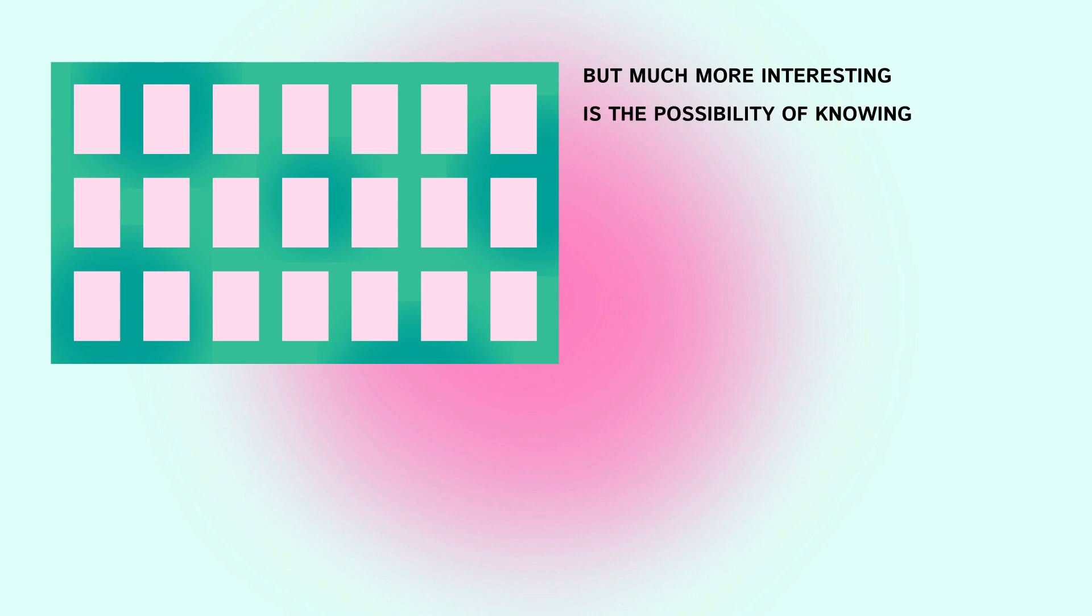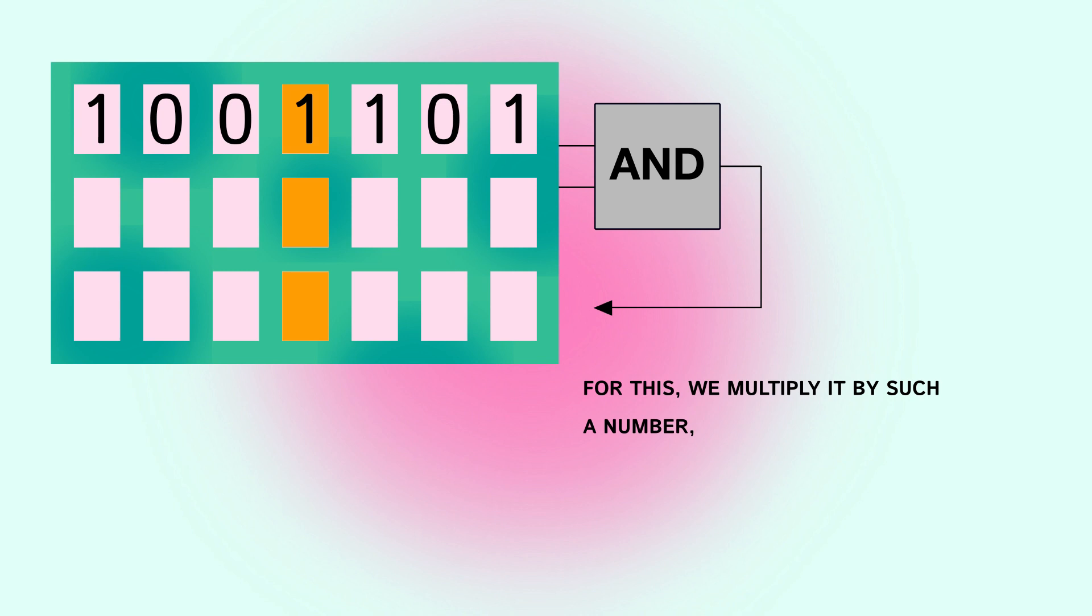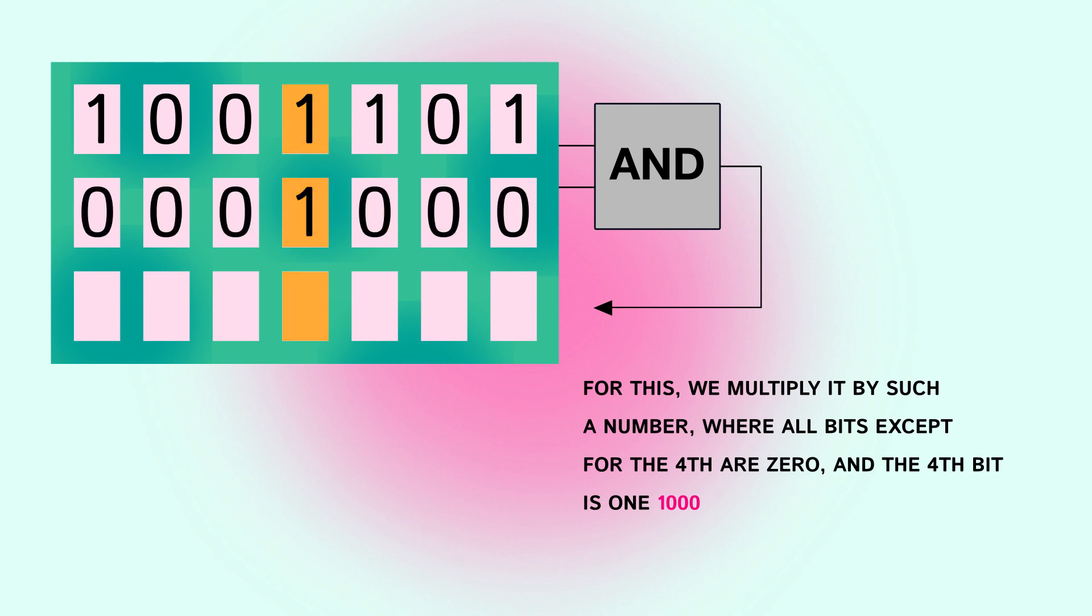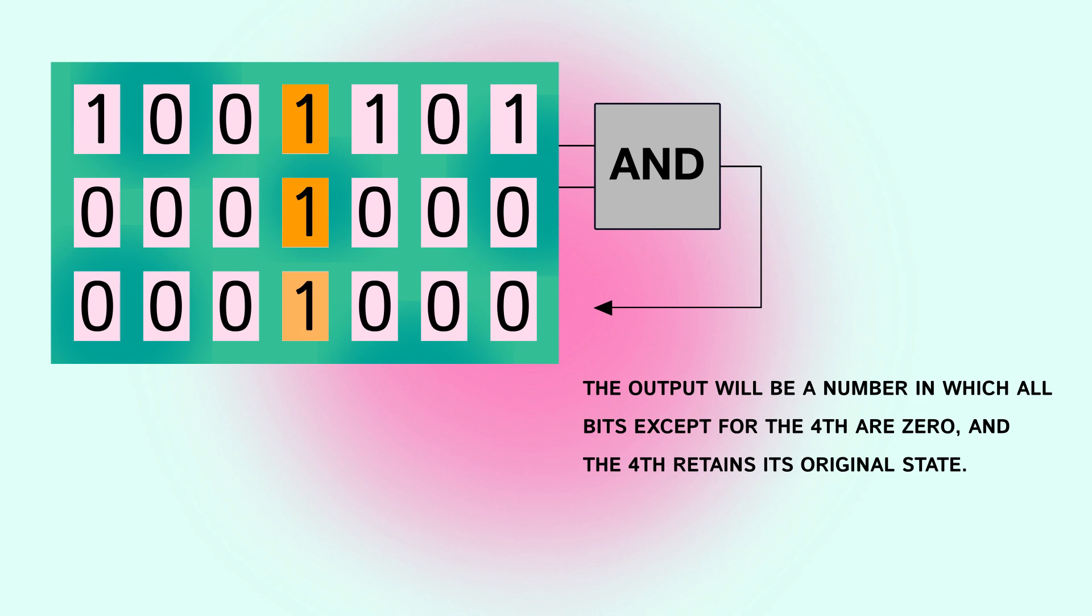But much more interesting is the possibility of knowing the state of a specific bit of a number. Suppose let's take the number 1001101 and assume we want to know the state of its fourth bit. For this we multiply it by such a number where all bits except the fourth are 0 and the fourth bit is 1: 1000. The output will be a number in which all bits except for the fourth are 0 and the fourth retains its original state. This is still just a number, not a boolean variable.